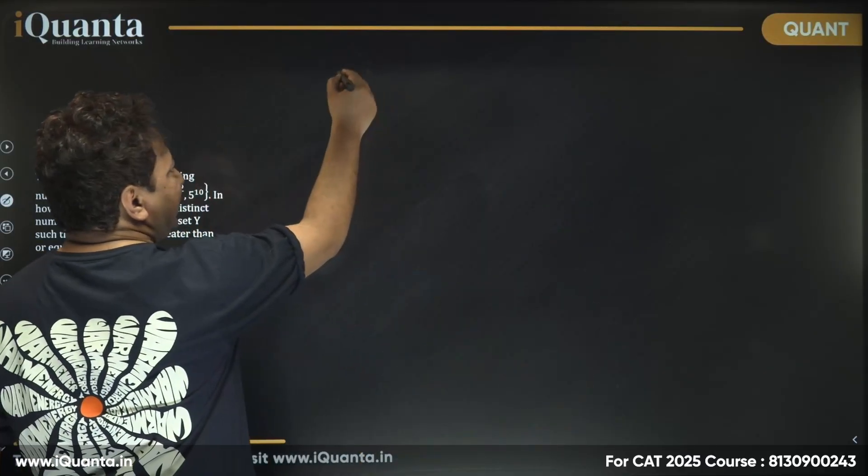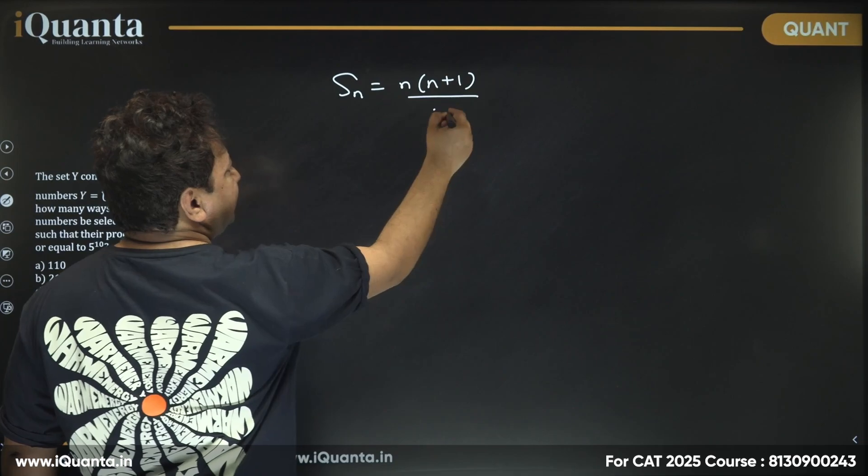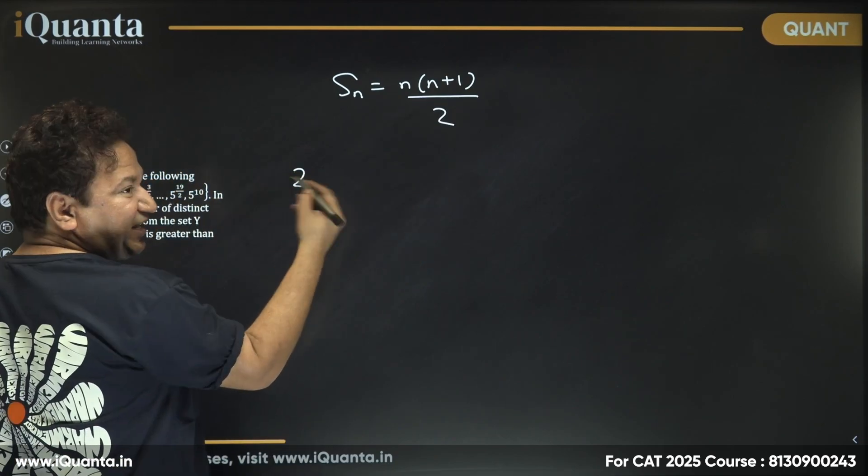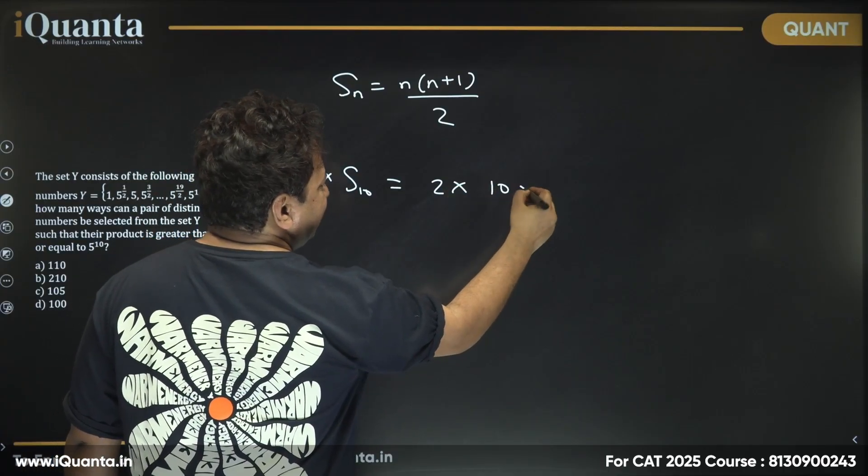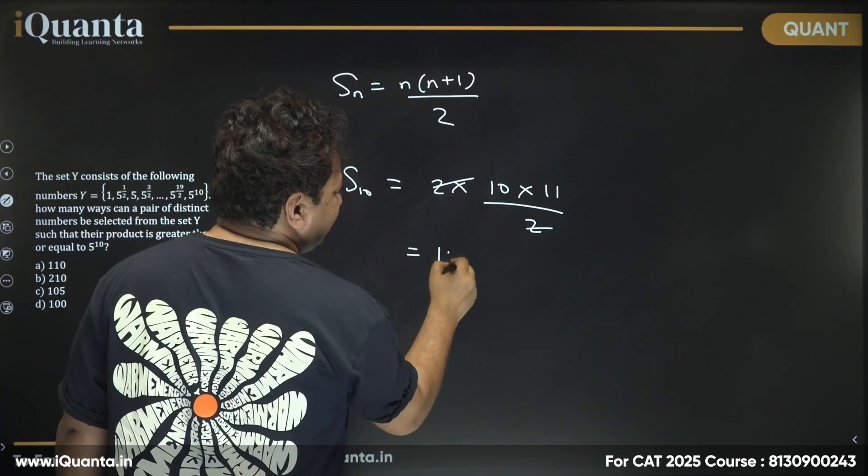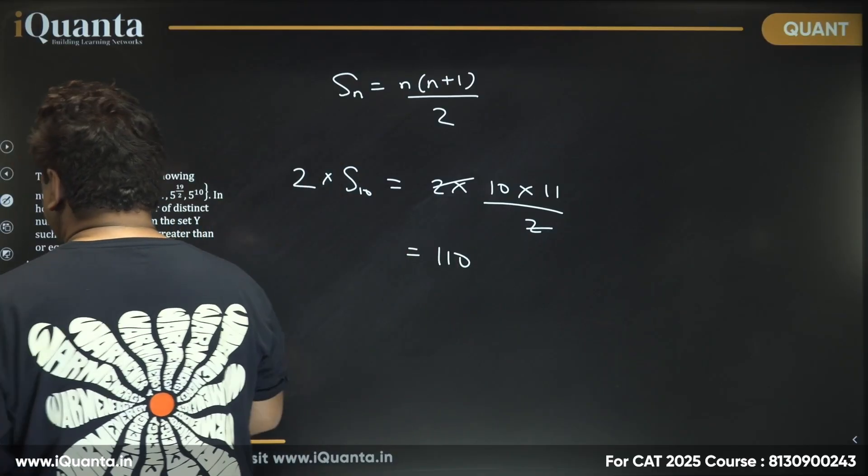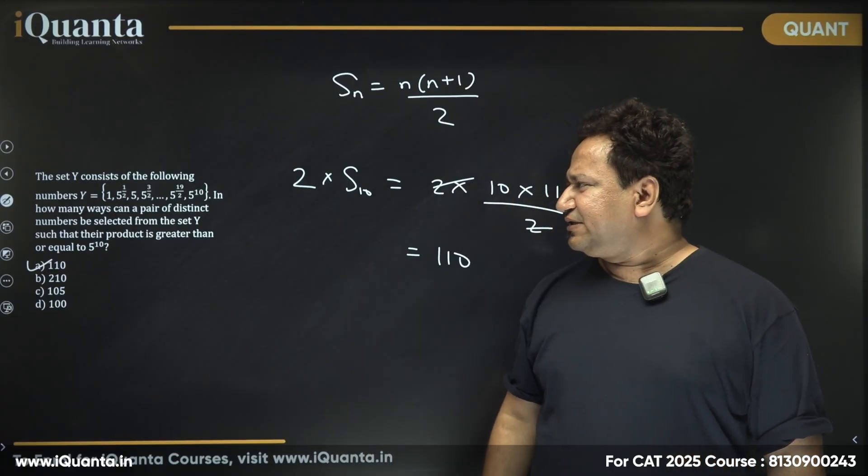Sum of n natural numbers is given by n(n+1)/2. Here we need to find twice the sum of first 10 natural numbers, which will be 2 × 10 × 11/2, which gives us 110 as the final answer. So now in this question, this question is a brilliant question.